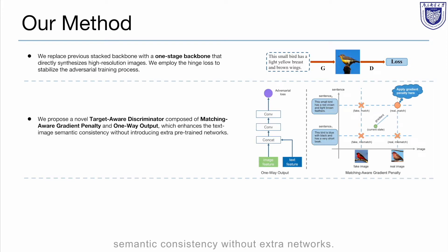Furthermore, to enhance text-image semantic consistency without extra networks, we propose a novel target-aware discriminator composed of matching-aware gradient penalty and one-way output. There are four kinds of inputs of our discriminator.